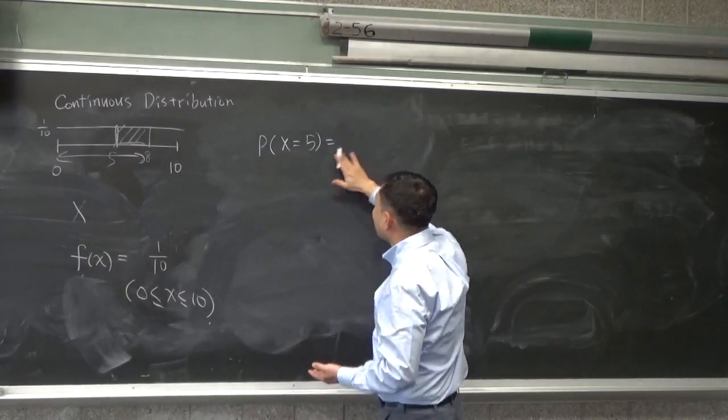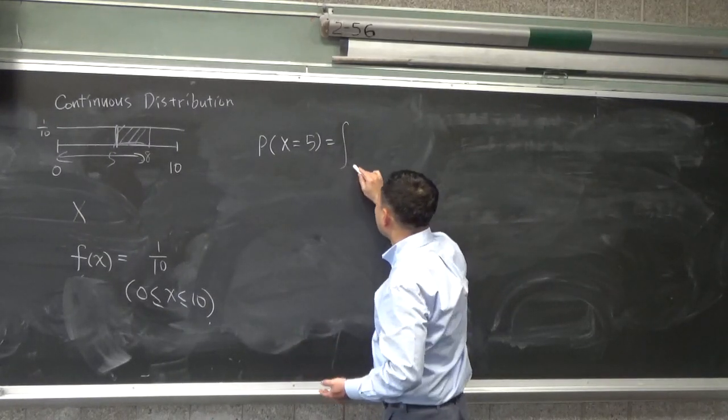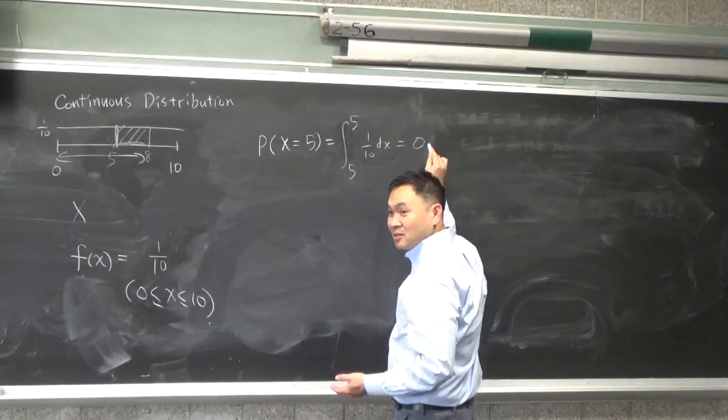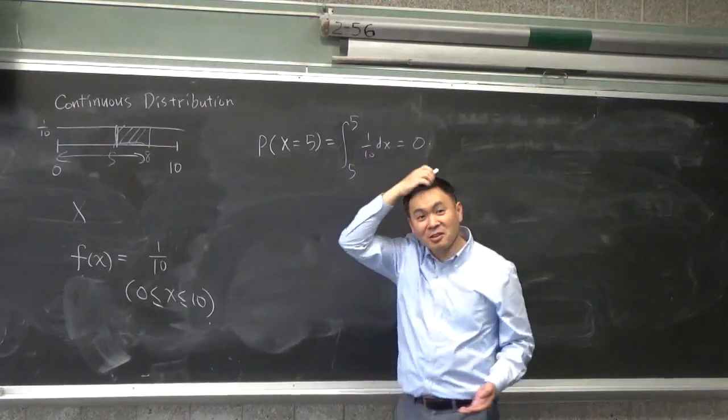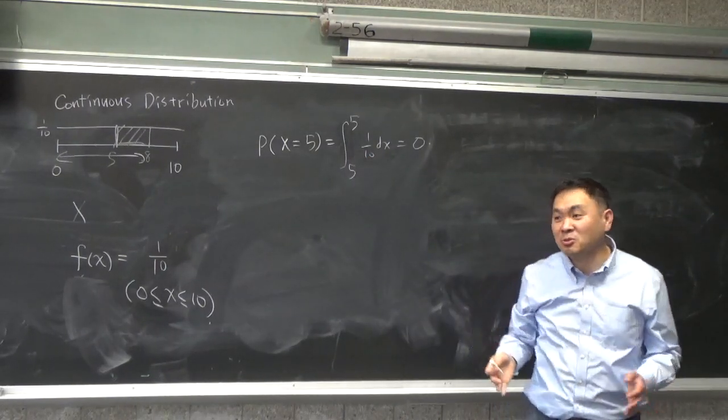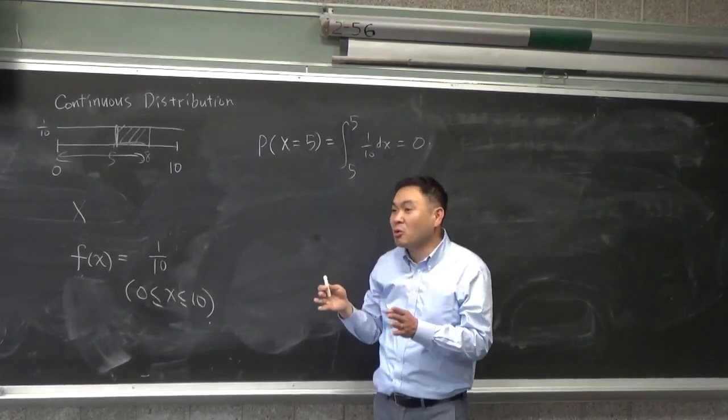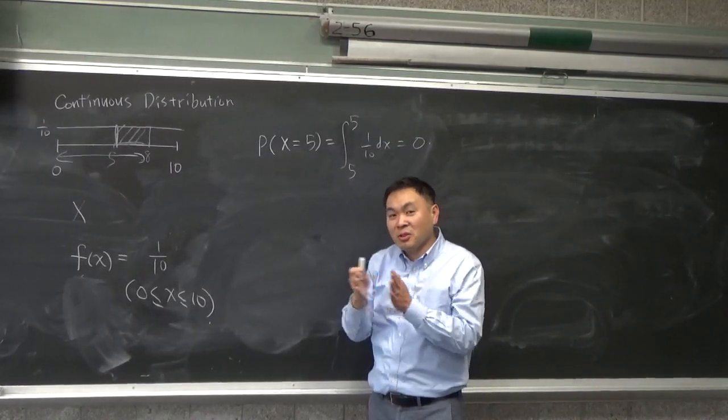So one way to say it would be, well that would be like integrating 5 to 5 of one tenth. That's 0, right? In a continuous distribution, there is no such thing as exactly something. It probably will only give you values if you give an interval.